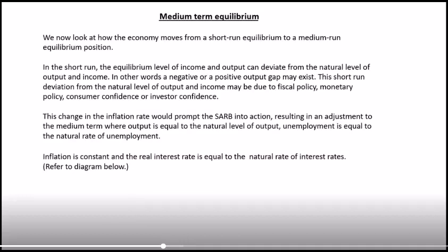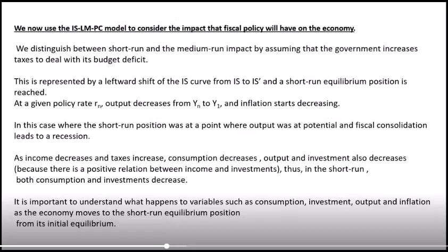Now let's use the ISLM-PC curve to consider the impact of fiscal policy. We distinguish between the short-run and medium-run impact by assuming government increases taxes to deal with its budget deficit. An increase in taxes results in an improvement in the budget deficit and is considered a contractionary fiscal policy. This will shift the IS curve to the left, and the short-run equilibrium is reached.